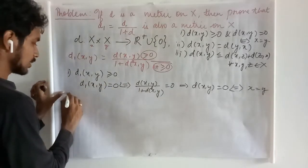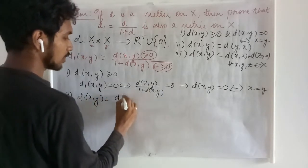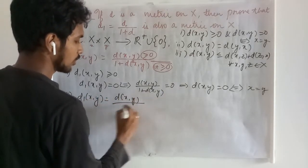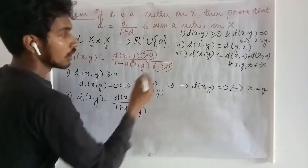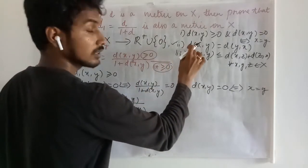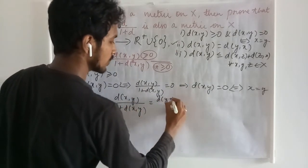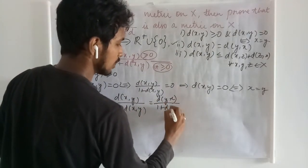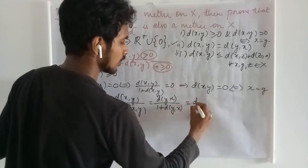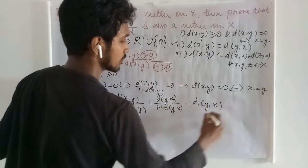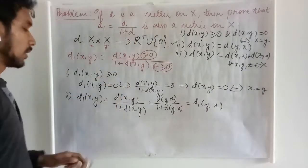Next, the symmetry: D1(x,y) is nothing but D(x,y) upon 1 plus D(x,y). Using the second condition of the metric, we can write this as D(y,x) upon 1 plus D(y,x), and this is nothing but D1(y,x). This proves the second condition for D1 to be a metric.